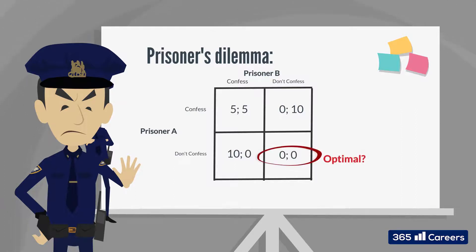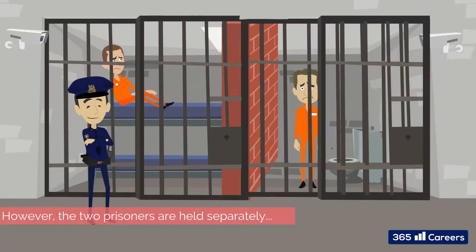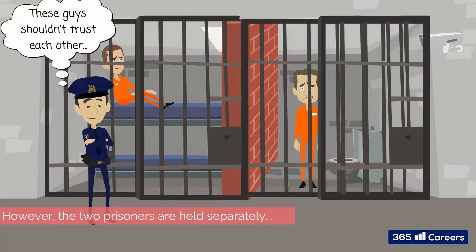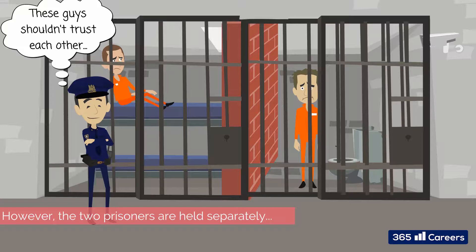At first sight, it appears the situation in which the two prisoners cooperate and do not confess is a clear optimal strategy. However, the two prisoners are held separately, so they wouldn't know the decision of the other party until they make their own. It becomes very dangerous trusting the person in the next room with five or ten years of your life. If a prisoner confesses, the worst that can happen is being sentenced to five years, but if he doesn't confess, he may end up in jail for ten years — or if he confesses and the other prisoner doesn't, he walks away free. Communication is not allowed.